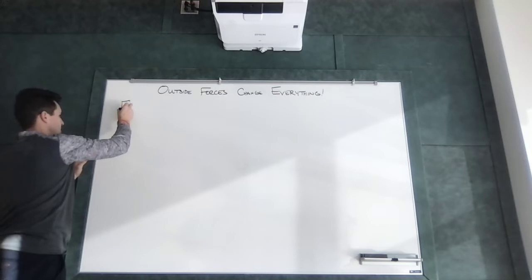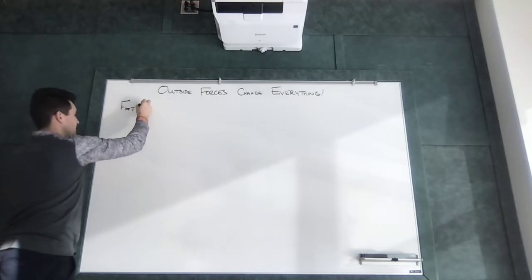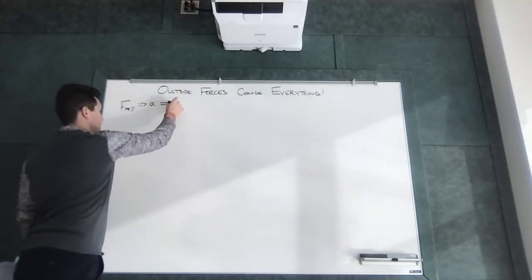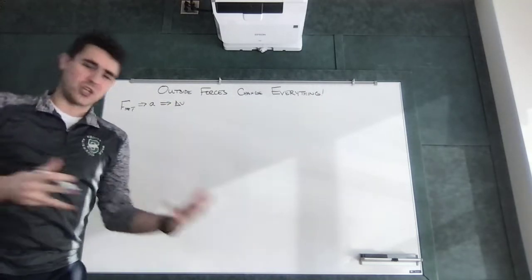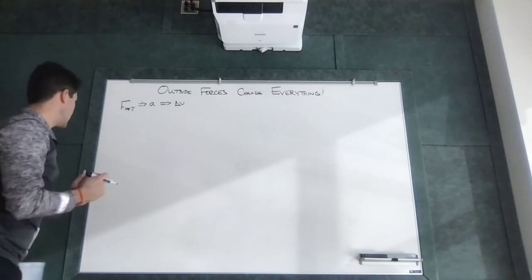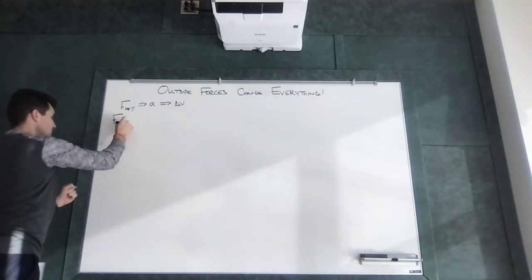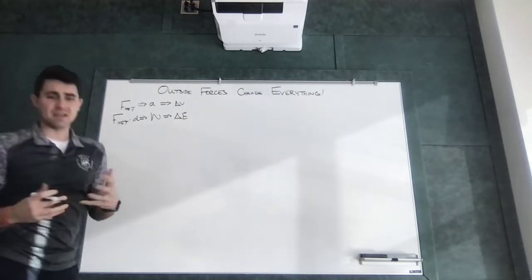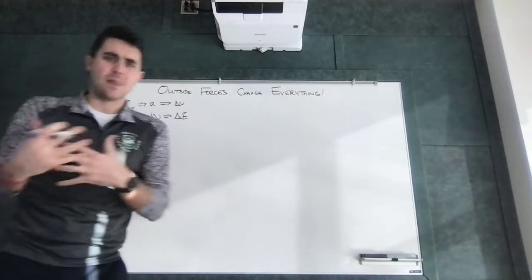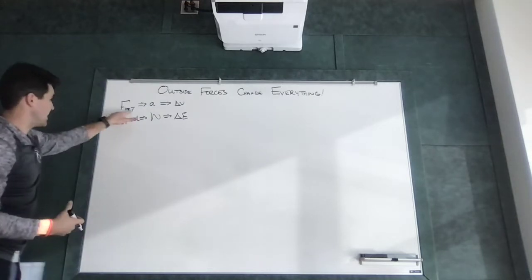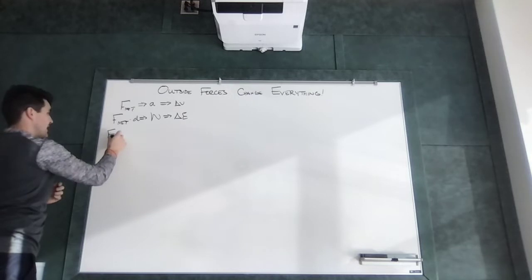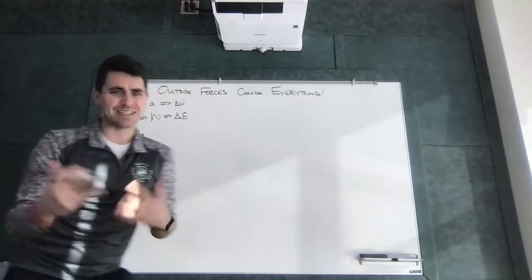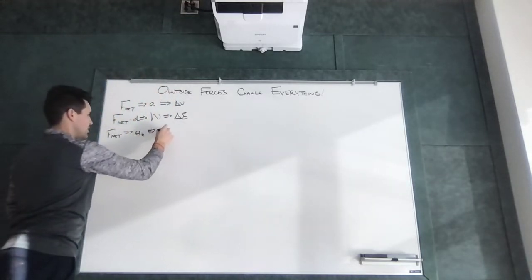Let's think about some examples of how outside forces change things. The first kind of force we talked about was the net force — the net force causes an acceleration, which is a change in velocity. So that outside force changes velocity. The other kind of net force over a distance is known as work, which is a change in energy. A net force can also cause a centripetal acceleration, which is really a change in direction.